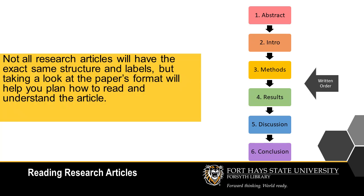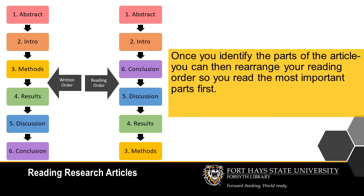Not all articles will have the exact same structure and labels, but taking a look at the paper's format will help you plan how to read and understand the article. Once you identify the parts of the article, you can then rearrange your reading order so you read the most important parts first.